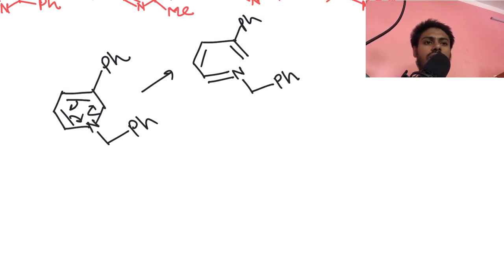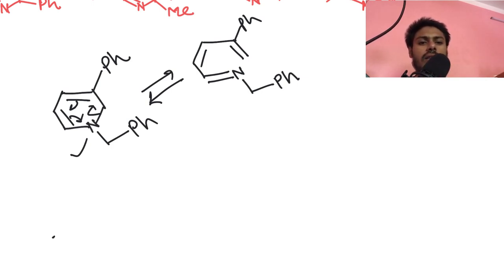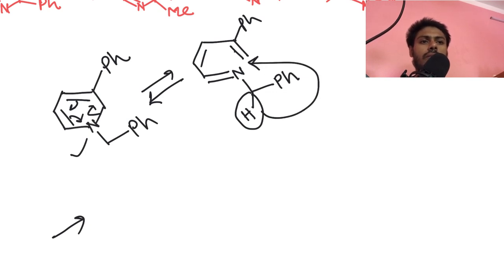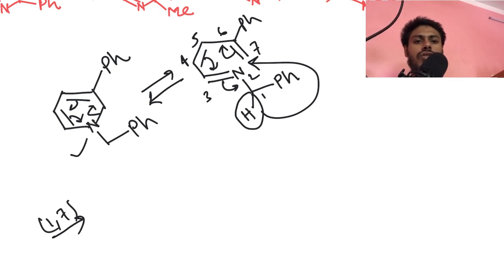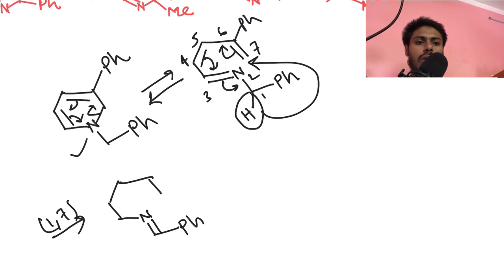Now, again there is no reactant — only temperature is given. Another pericyclic reaction can take place. It can either reverse back to the starting material by an electrocyclic ring closing reaction, or it can do a 1,7-hydride shift. This hydrogen can shift over here: 1-2-3-4-5-6-7. So this is basically a 1,7-shift.